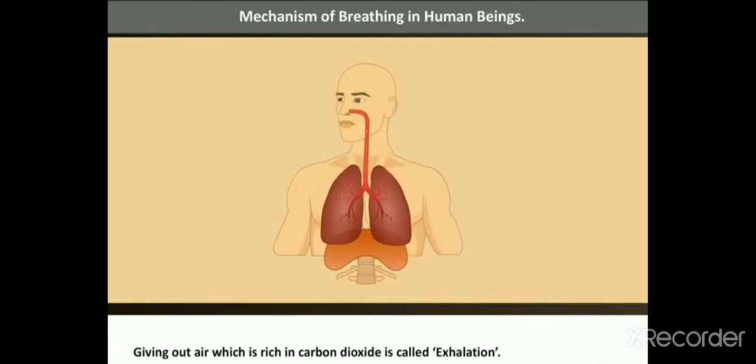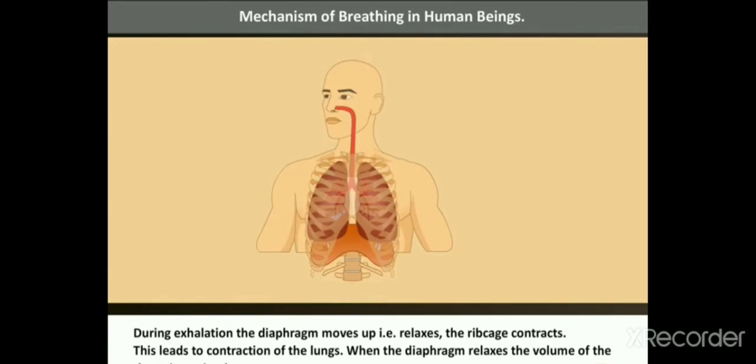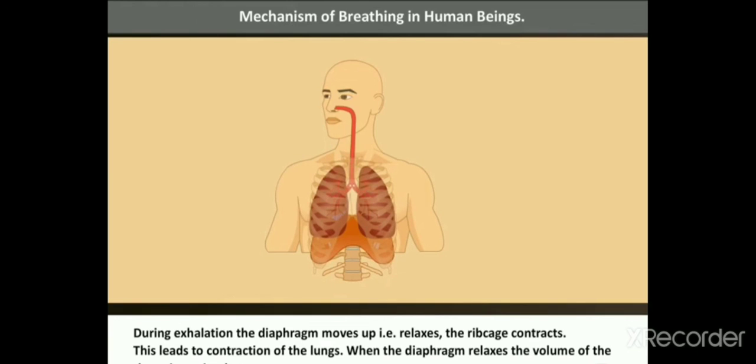Giving out air which is rich in carbon dioxide is called exhalation. During exhalation, the diaphragm moves up, in other words, relaxes. The rib cage contracts. This leads to contraction of the lungs.